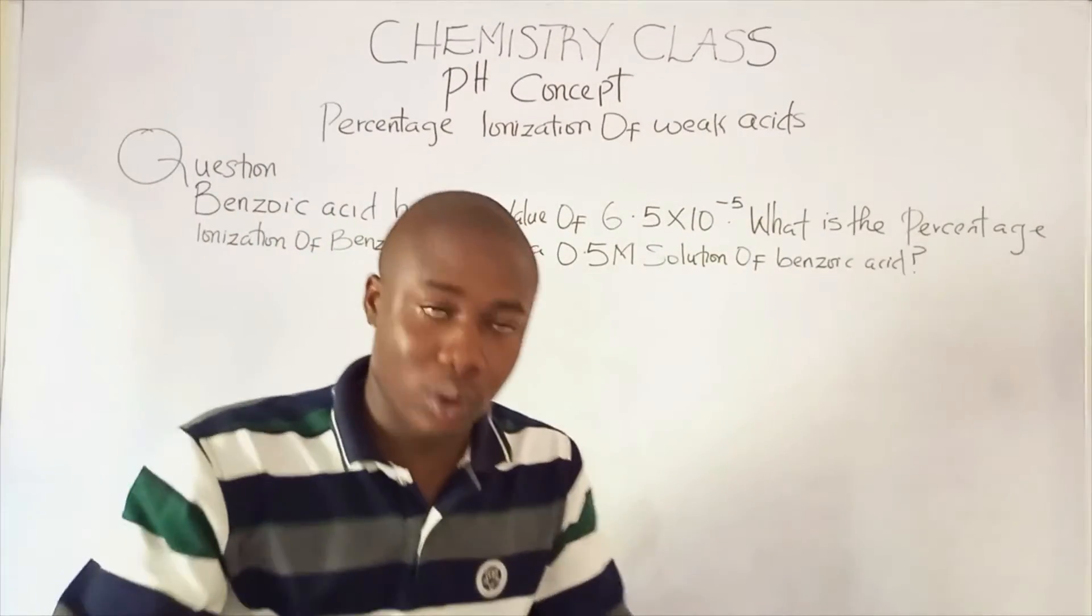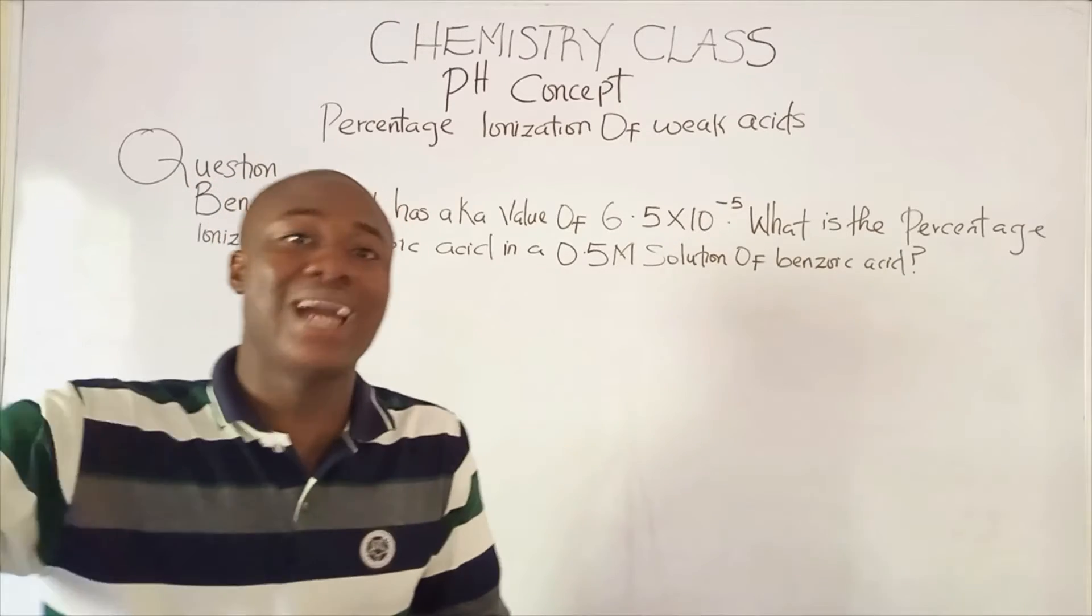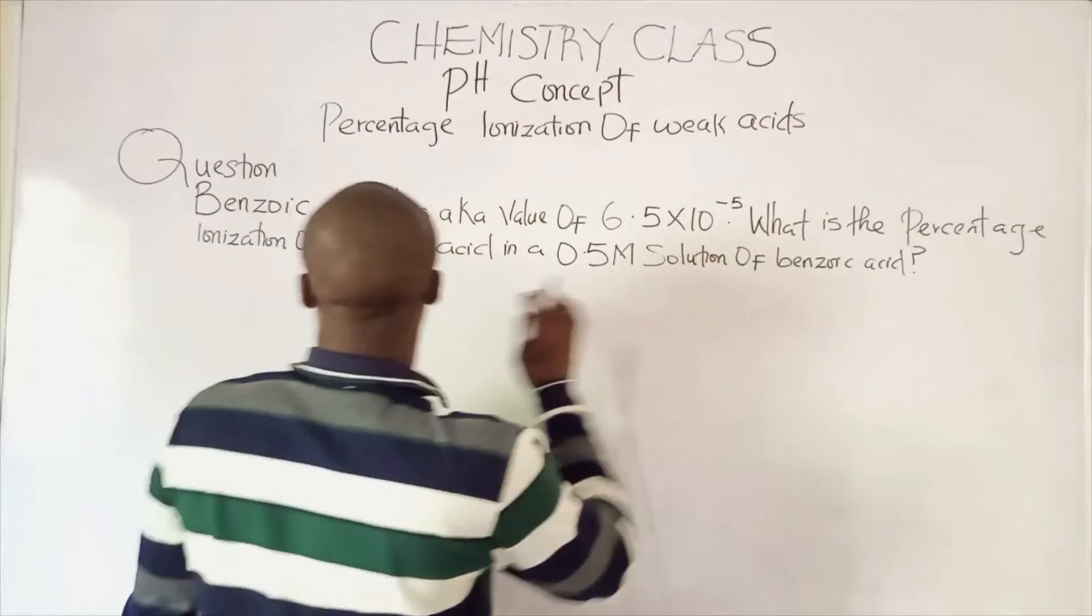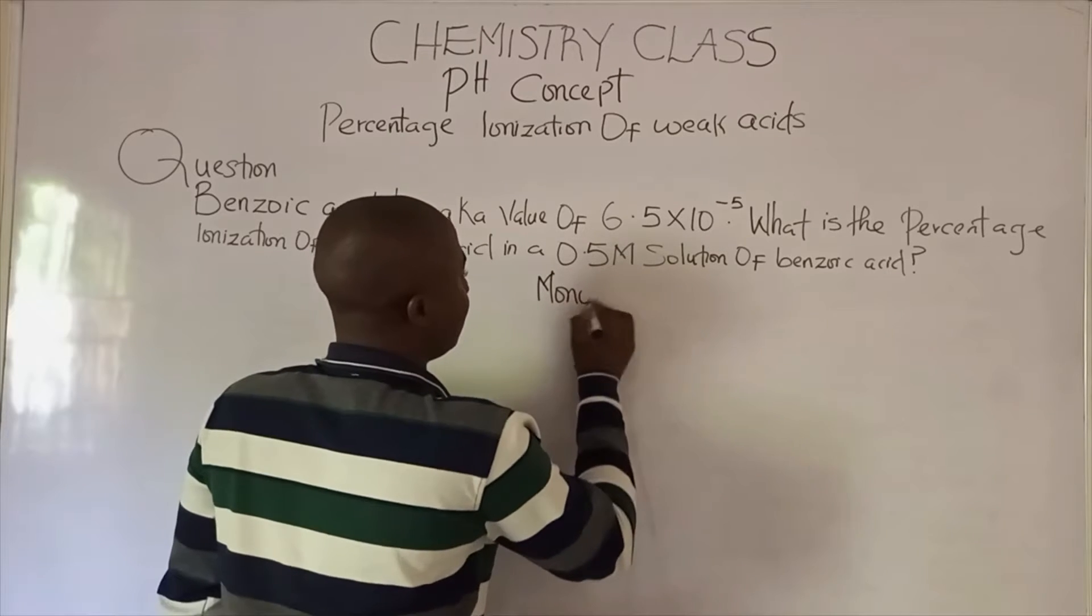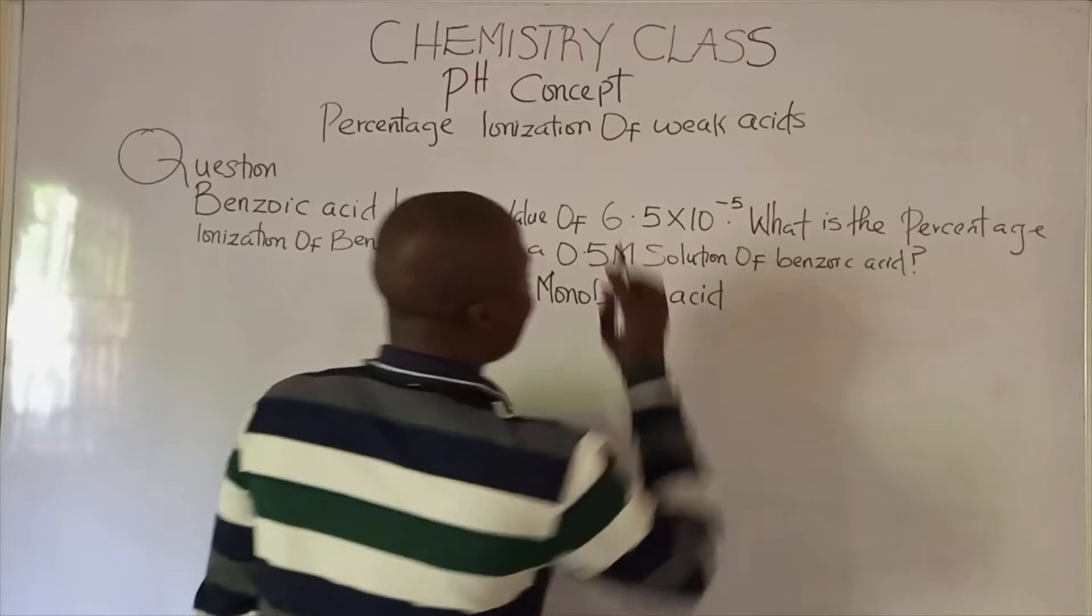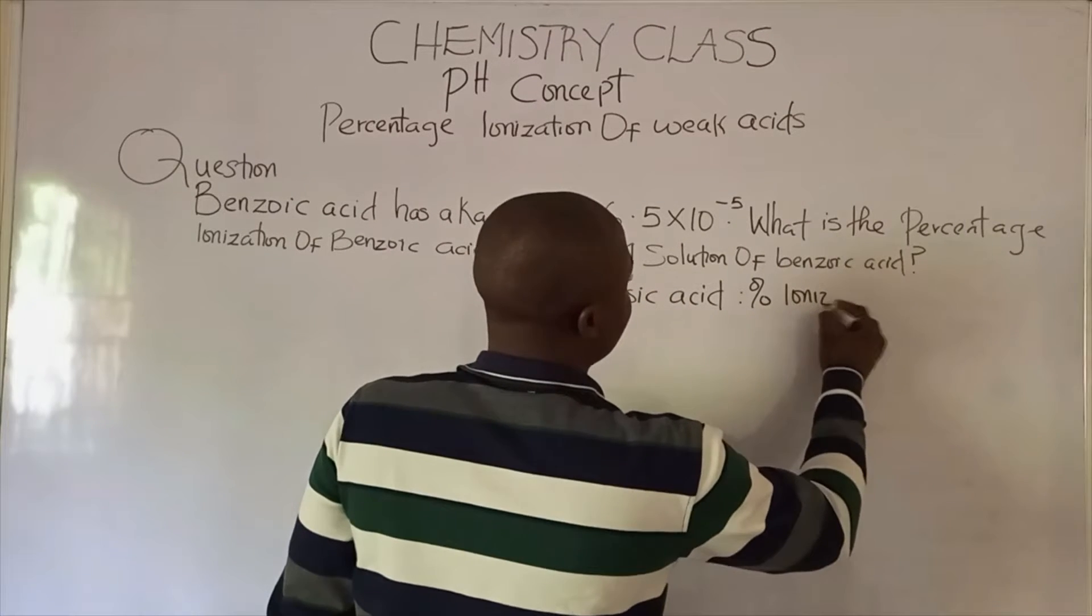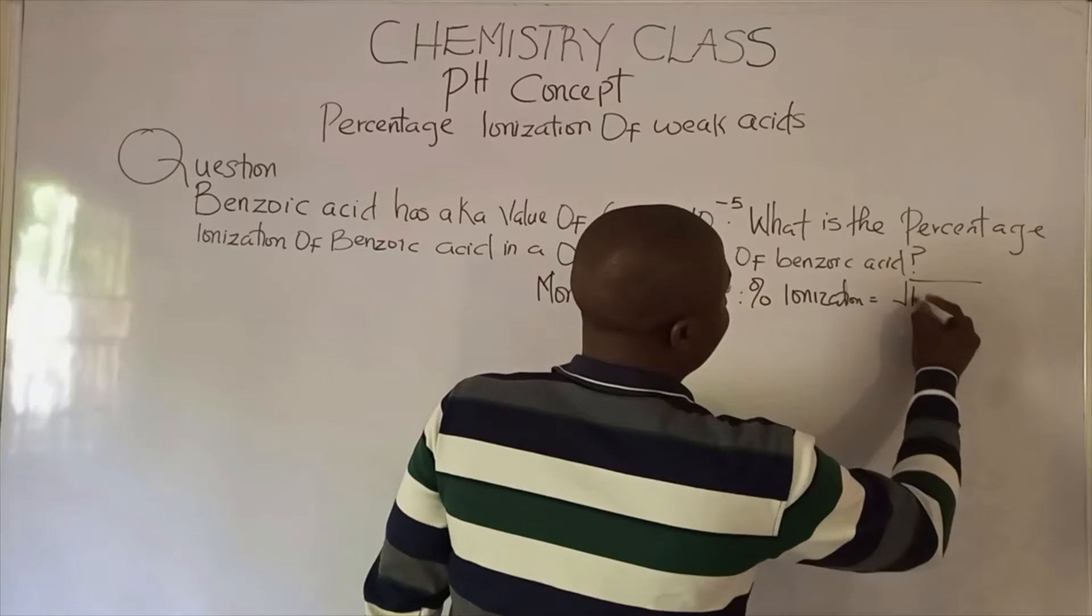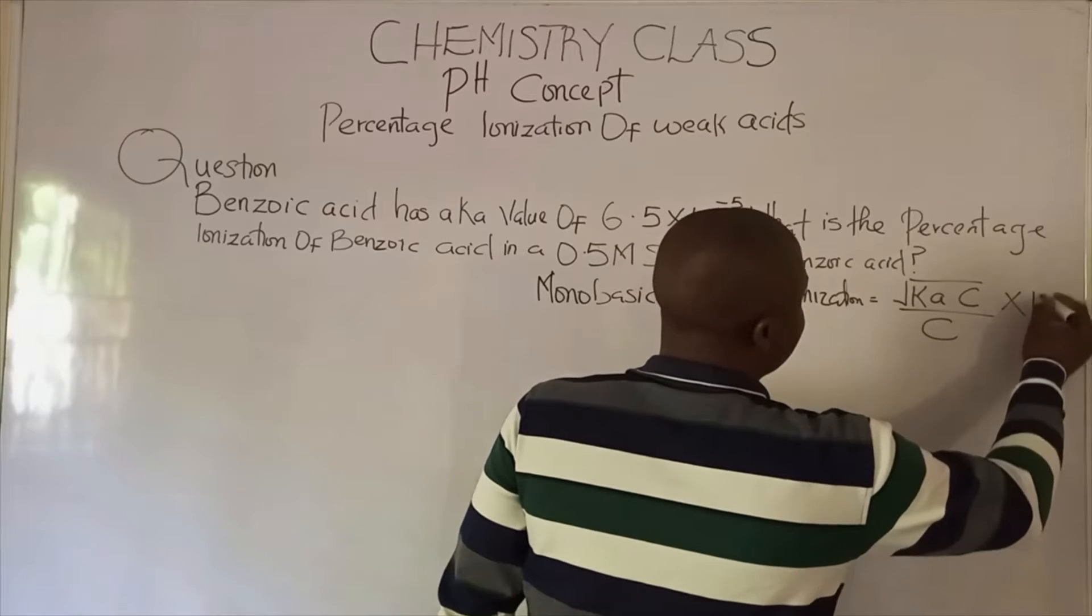For a weak mono-basic acid, it has its own formula to calculate percentage ionization. It is simply the square root of Ka times c over c, times 100.